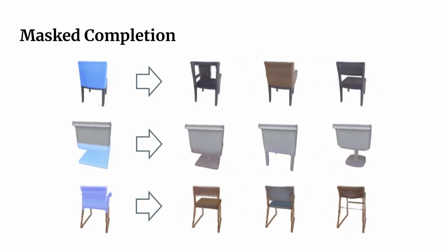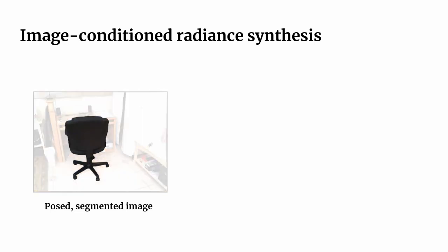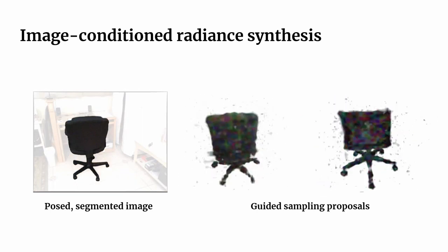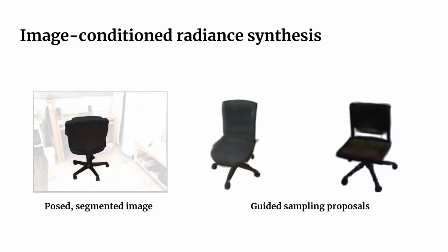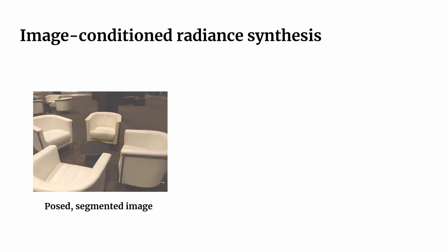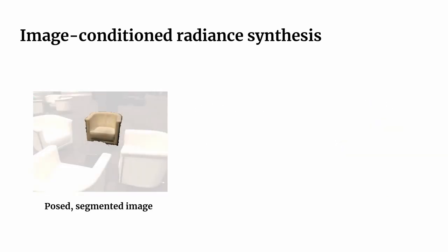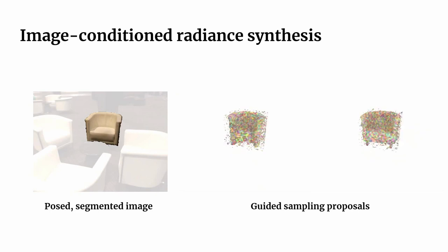We also demonstrate the strength of our prior by image-to-volume synthesis on real images from ShapeNet. Given a segmented image, we can guide the sampling process by simultaneously minimizing the photometric rendering loss, leading to multiple plausible radiance field proposals.